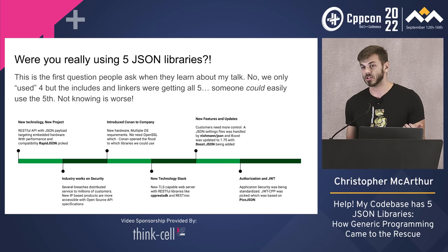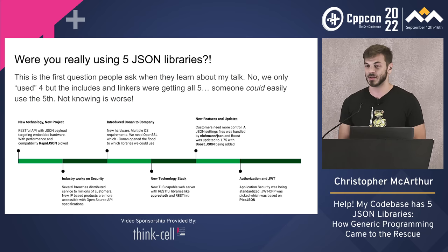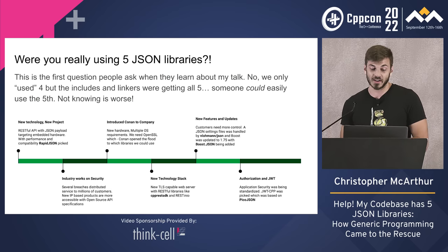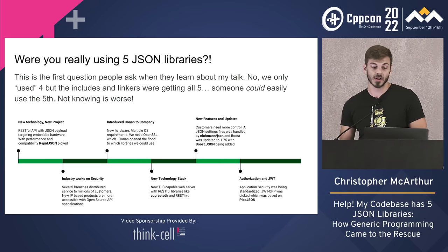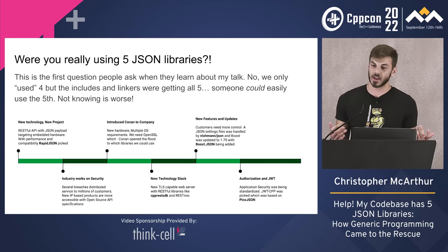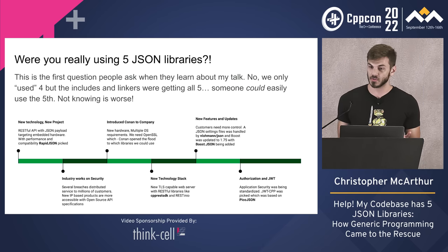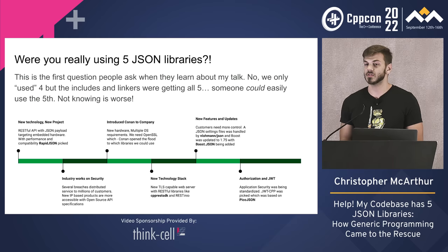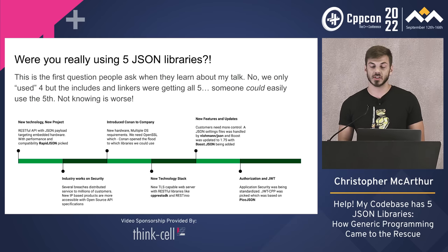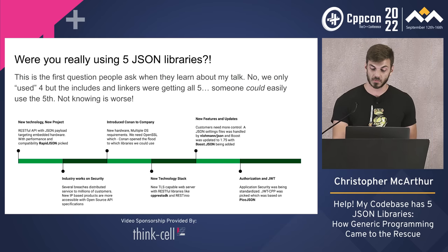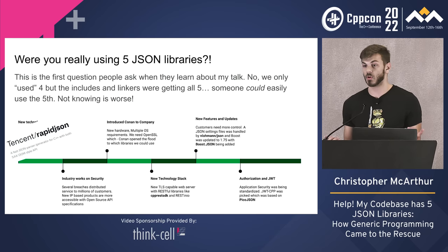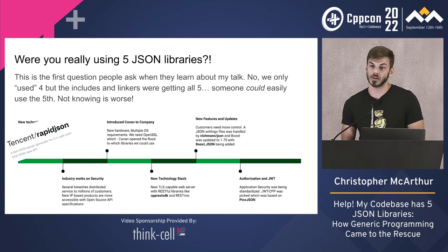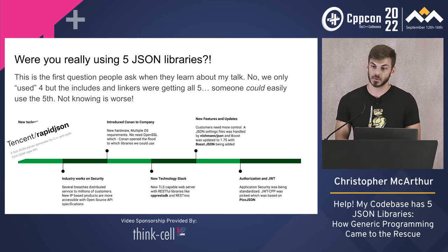The first question I almost always get when people find out about this is: were you really using five JSON libraries? And yes. I made a cute little timeline for you. Like any new project, we started off with some new technologies — a RESTful API JSON library. We picked RapidJSON at the beginning. It was performance-oriented and low-level enough to work with our IoT devices, and it was pretty good.